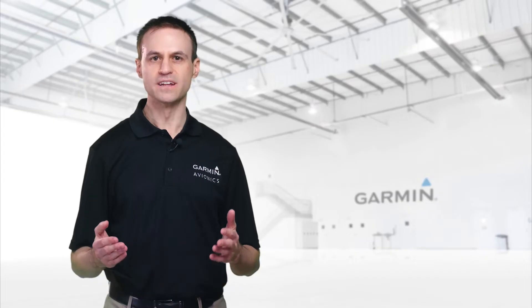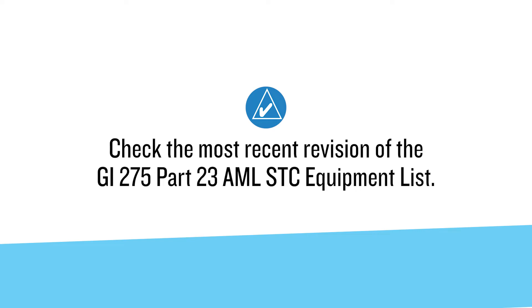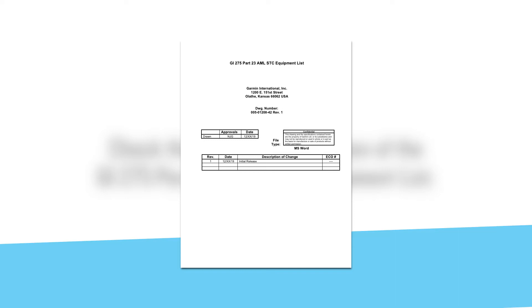Have you verified and updated your software? Since you already assigned the unit IDs, you must verify if the appropriate software is installed. First, check the most recent revision of the GI-275 STC equipment list to confirm which software version should be on the units.